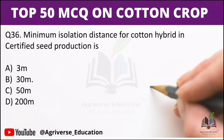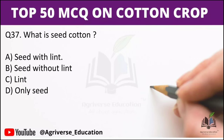Next question: Minimum isolation distance for cotton hybrid in certified seed production is? Options are 3m, 30m, 50m, or 200m. The right answer is option B, 30 meters — minimum isolation distance for cotton hybrid in certified seed production is 30 meters.